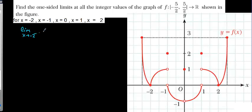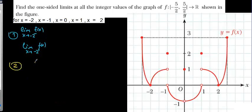Now let me explain again. The problem says: find the limit for x equal to minus 2, x equal to minus 1, x equal to 0, x equal to 1, and x equal to 2. For one-sided limits, I'm going to find: the limit as x tends to minus 2 from the negative side of f(x), and the limit as x tends to minus 2 from the positive side. Similarly for minus 1 from the negative side and from the positive side.